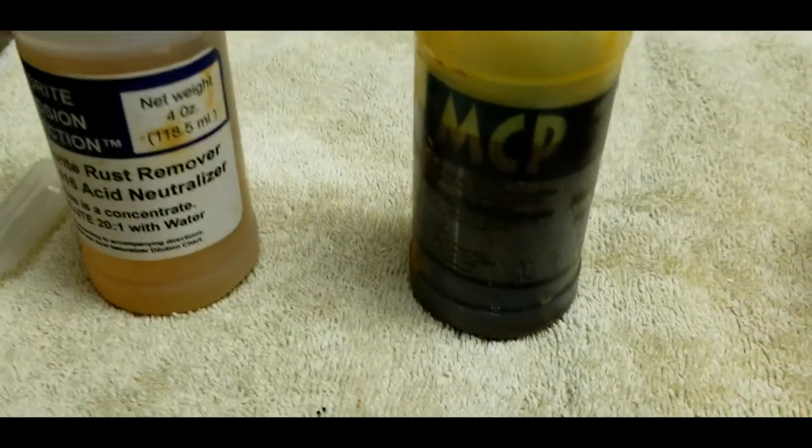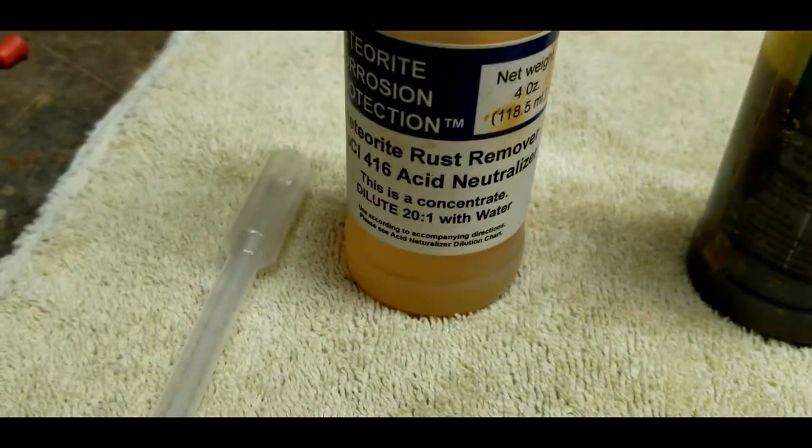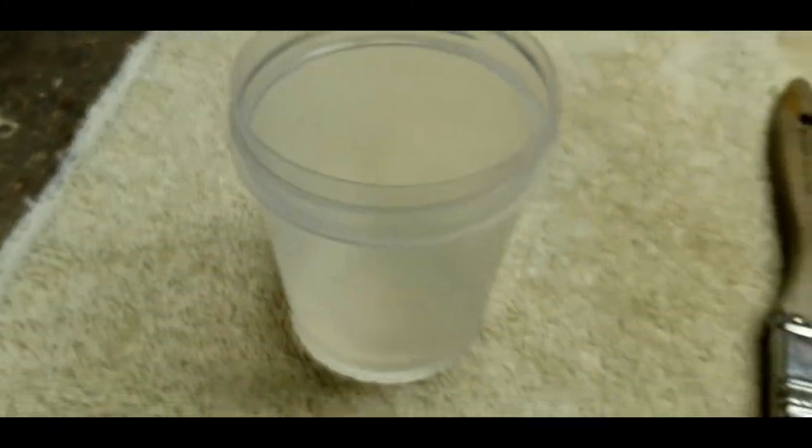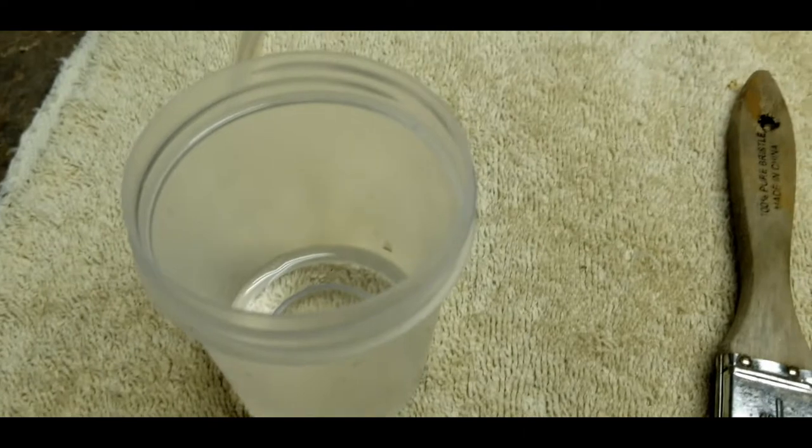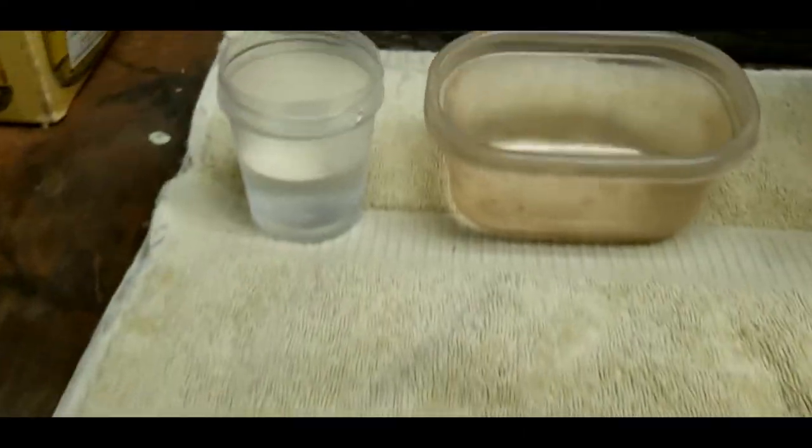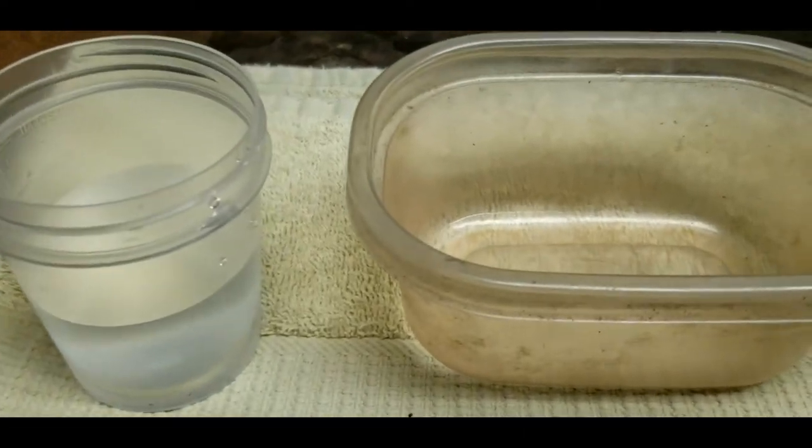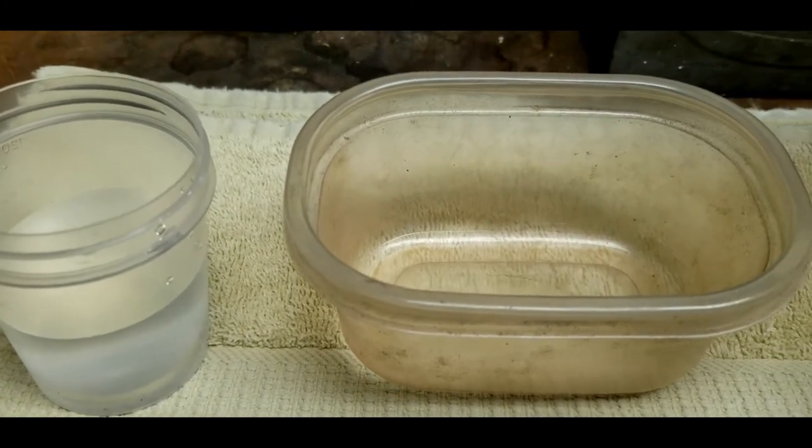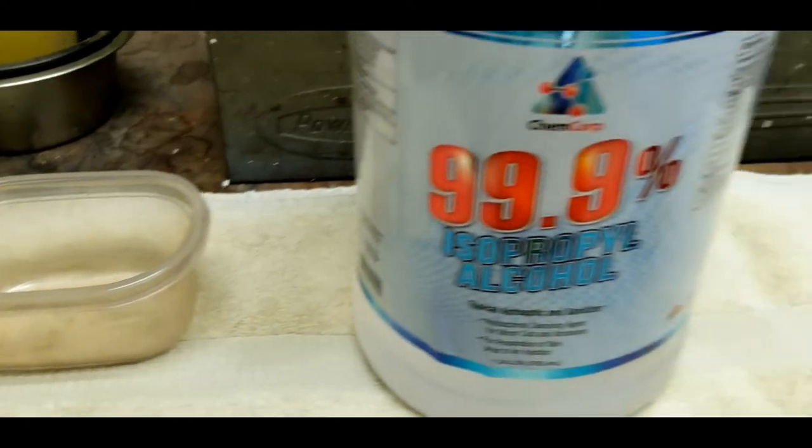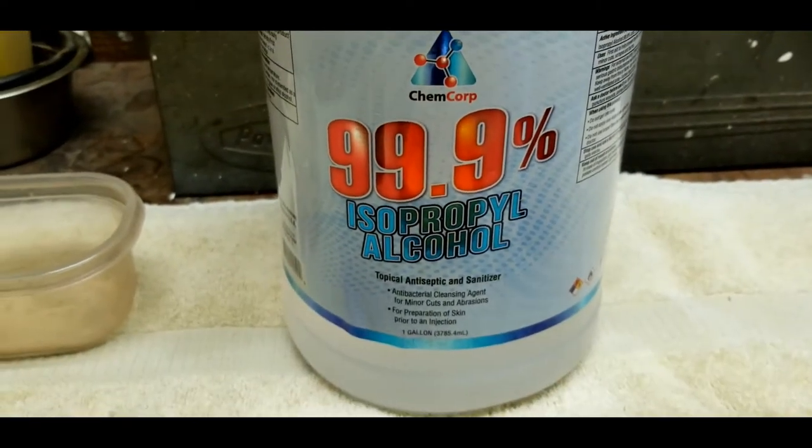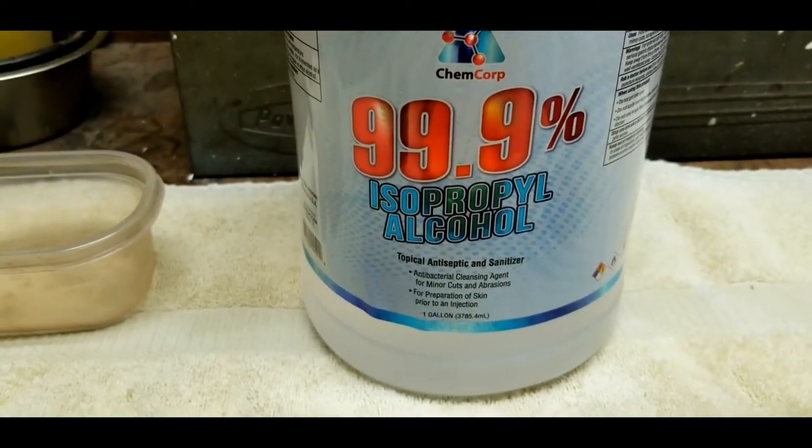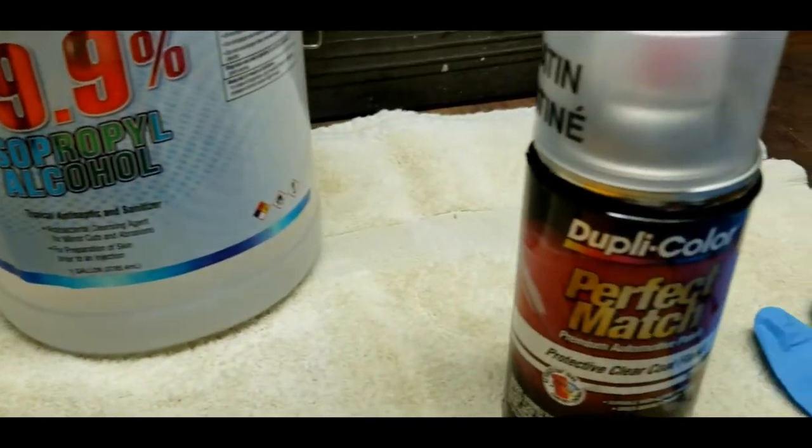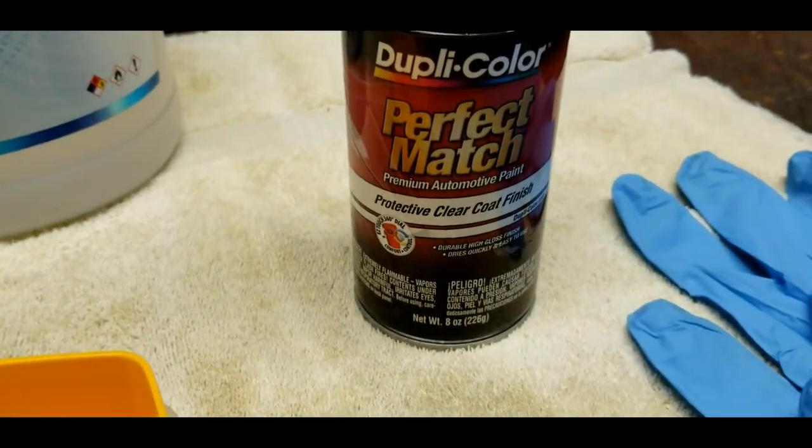I've got my ferric chloride right there. I have my acid neutralizer. The dilution 20 to 1 has already been done with just a little bit. It doesn't take much. Just brush it on, wash it off. I've got some distilled water and another little bathtub ready to go. Now to pre-clean the meteorite, I used some 99.9% isopropyl just to get rid of any surface greases that may have accumulated. And once the process is done, I'm going to preserve it with some automotive clear coat.